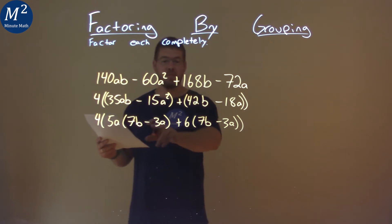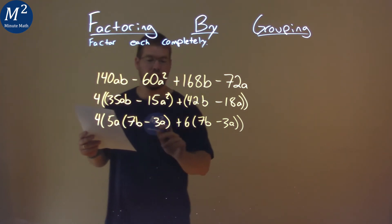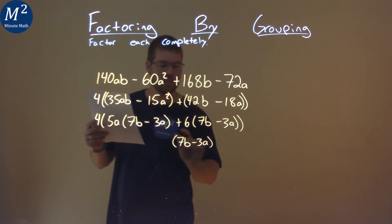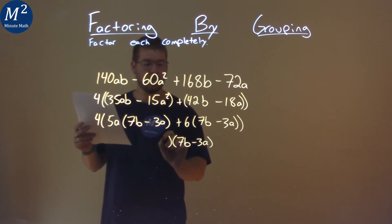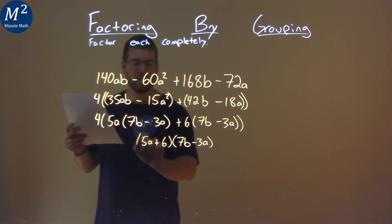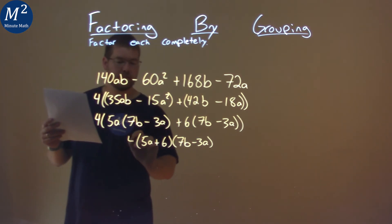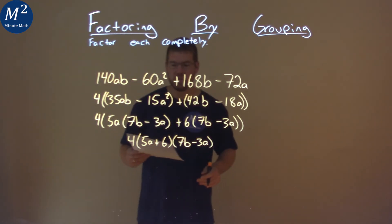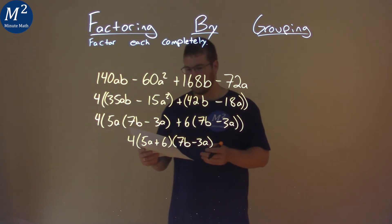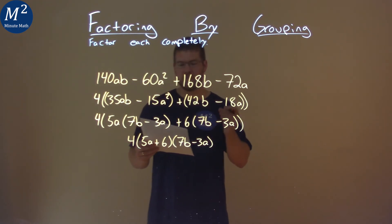Well, that should be familiar. 7b minus 3a is written twice. So if I pull that out, 7b minus 3a, from both parts, I'm left with that being multiplied by the 6, and the 5a comes down. Don't forget this 4 here. And so now our final answer is 4 times 5a plus 6 times 7b minus 3a.